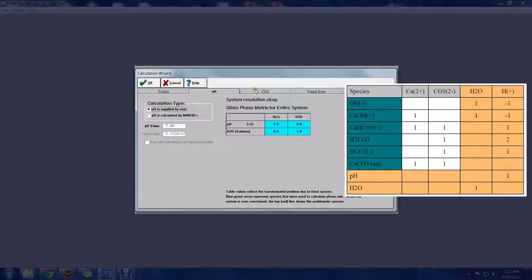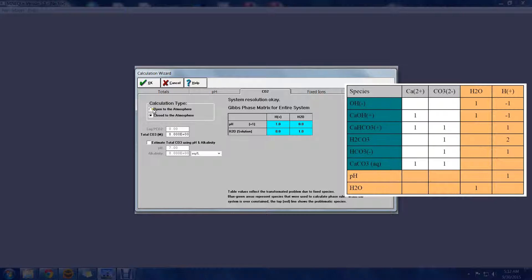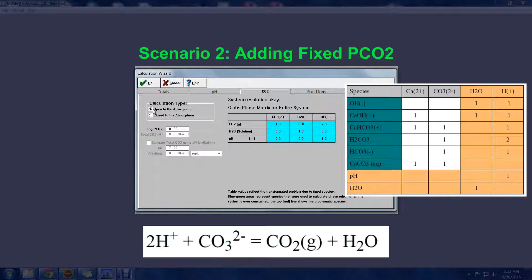Now, we would like to have the system in equilibrium with atmospheric CO2. Alone, CO2 gas has the stoichiometry to control either proton, water, or carbonate, but since the proton and water are already removed from the problem, the CO2 will control the carbonate.